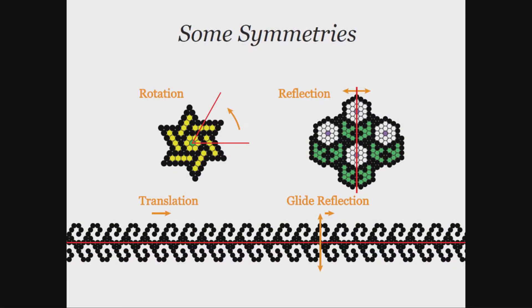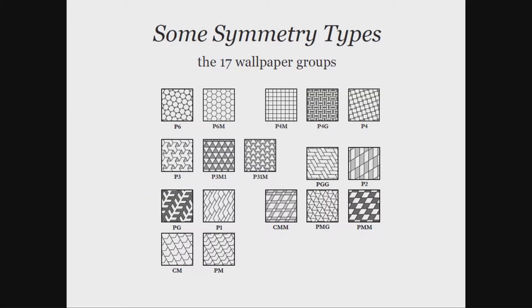I'm going to be talking to you about symmetry samplers, which means I need to say what I mean by symmetry and what I mean by samplers. The symmetries we're going to be looking at are symmetries of the plane. All of the symmetries of the plane are going to be either rotations, reflections, translations, or glide reflections, and then we can look at the symmetry types of complicated patterns.